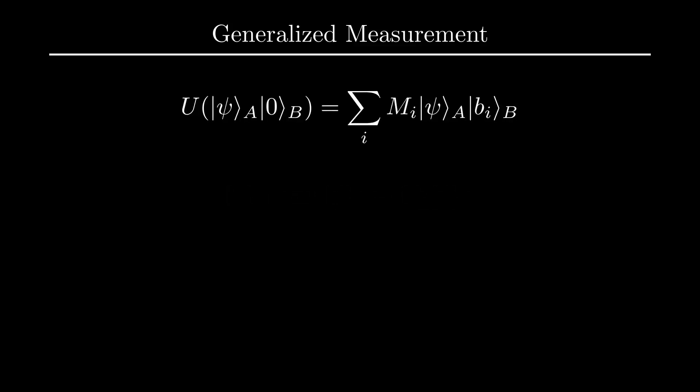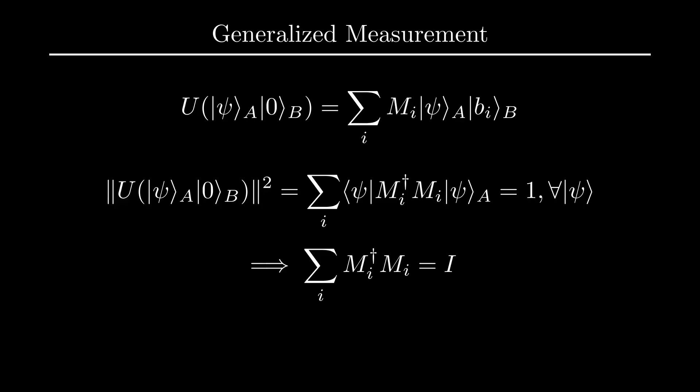Let's generalize this analysis to the case where B is an n-dimensional system. In particular, suppose that we apply some unitary U to our qubit A tensored with 0 and we want to measure pointer B with respect to the B basis, giving us the measurement outcome B_i. We can expand the output of U acting on psi_A tensored with 0_B as the sum over i of M_i psi tensored with B_i. Since U is unitary and therefore norm-preserving, we have that the norm of this state is 1 for any psi, meaning that the sum of M_i dagger M_i over all B is always equal to the identity.